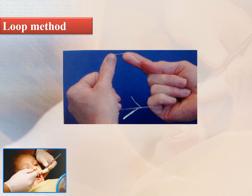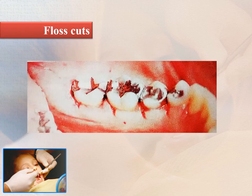In the loop method, the floss is tied in the form of a loop. Zealous snapping of floss through contact areas creates proximal grooves in the gingiva called floss cuts, as seen in the picture — these are caused by faulty flossing technique.